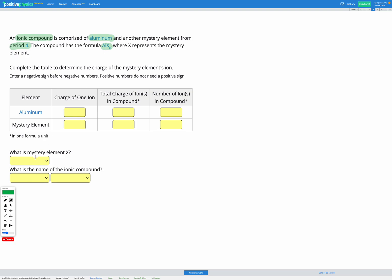Okay, so we know that in one formula unit of our ionic compound, we have one aluminium ion and three X ions, where X is the mystery element. So let's fill that in to our table. We know we have one aluminium and three of our mystery element.